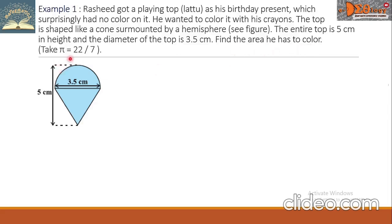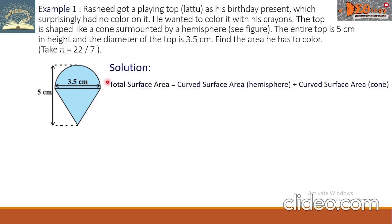Take pi equals 22 over 7. The required area is the total surface area, equal to the curved surface area (CSA) of the hemisphere plus the curved surface area (CSA) of the cone. Let us solve the CSA of hemisphere and CSA of cone.